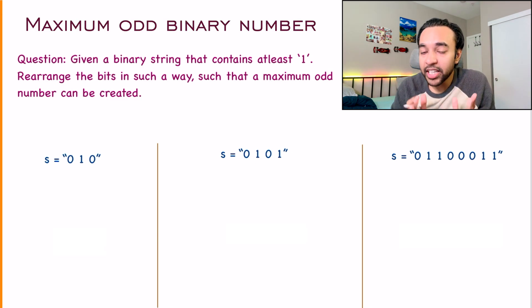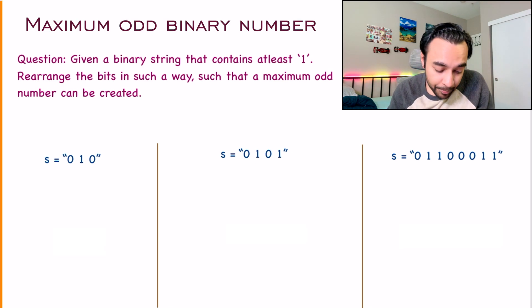First of all, let us try to make sure that we are understanding the problem statement correctly. In this problem, you are given a binary string. Binary simply means that the string will be composed of only zeros and ones. And there is a certain condition as well that this string contains at least one one, so you know that the string will not have all the characters as zero. Now, given the string, you have to rearrange all of these bits in such a way that you are giving me a maximum odd number that can be created. So, what does that mean?